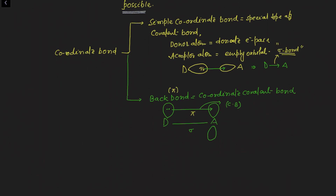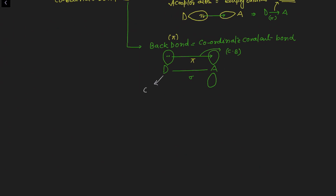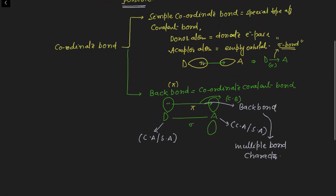We should not confuse simple coordinate bond and back bonding. In back bonding, the donor atom can be the central atom or the surrounding atom. Back bonding forms in the presence of a sigma bond and generates a multiple bond character. Back bonding has pi nature; simple coordinate bond has sigma nature. Simple coordinate bond can have independent existence, but back bonding always forms in the presence of a sigma bond.